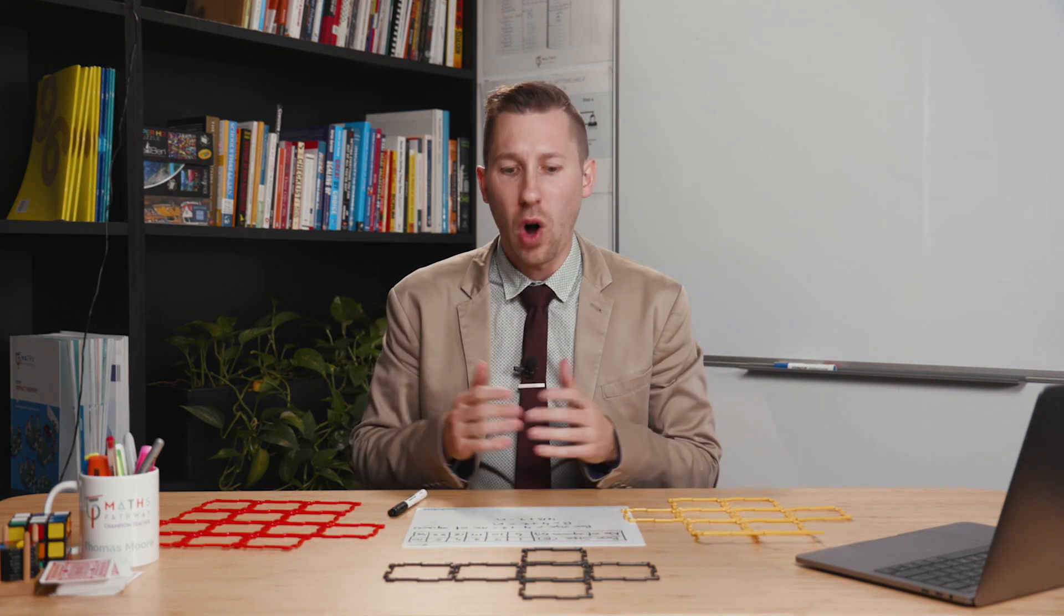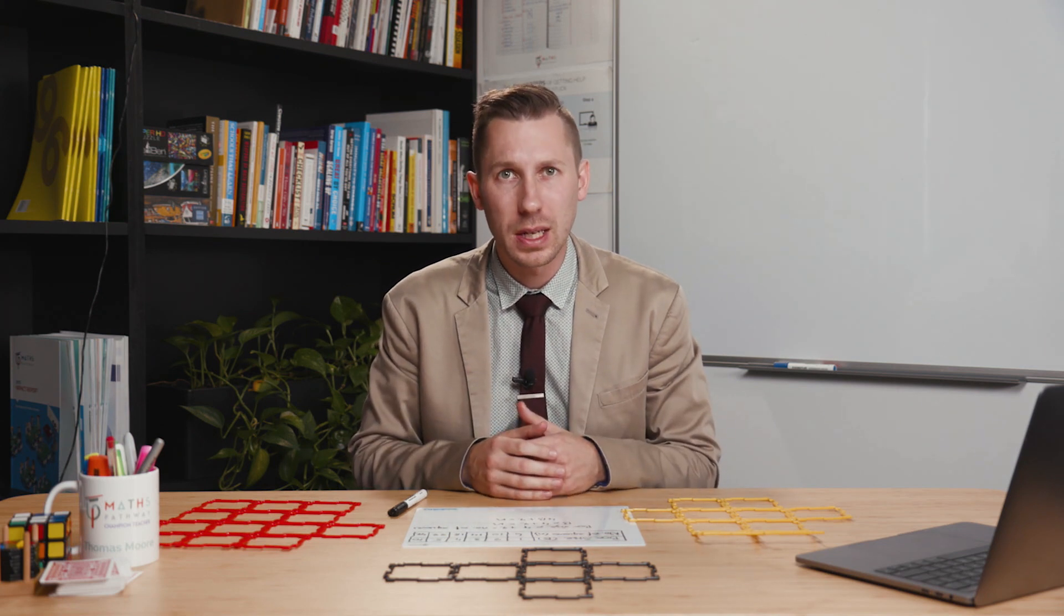So now that we have an algebraic rule, we can use this to do a whole range of things. For example, I might ask students, how many squares will it take to make a 1000 size box? Now we don't obviously have a thousand squares, so students will have to use the algebraic rule in order to be able to do this. And it'll actually help them to see the benefits of using algebra over using the concrete model, because obviously, algebra will save them so much time in the long run.